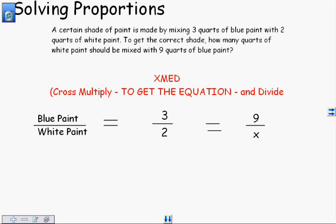Here's our method of solving. You are going to cross multiply to get the equation and divide. XMED. When you hear XMED, this is what you need to think. The X stands for cross. M stands for multiply. E stands for equation. D stands for divide. Notice how to get the equation is in all caps. That is the biggest mistake when solving proportions, is not writing the equation.